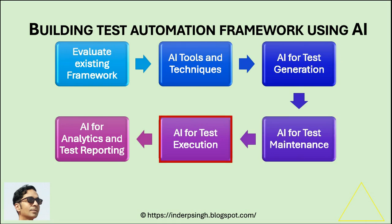Step five: Implement AI for test execution. AI test automation can automate QA testing with auto-prioritization of test cases, smart test scheduling, and parallel test execution using test automation tools.